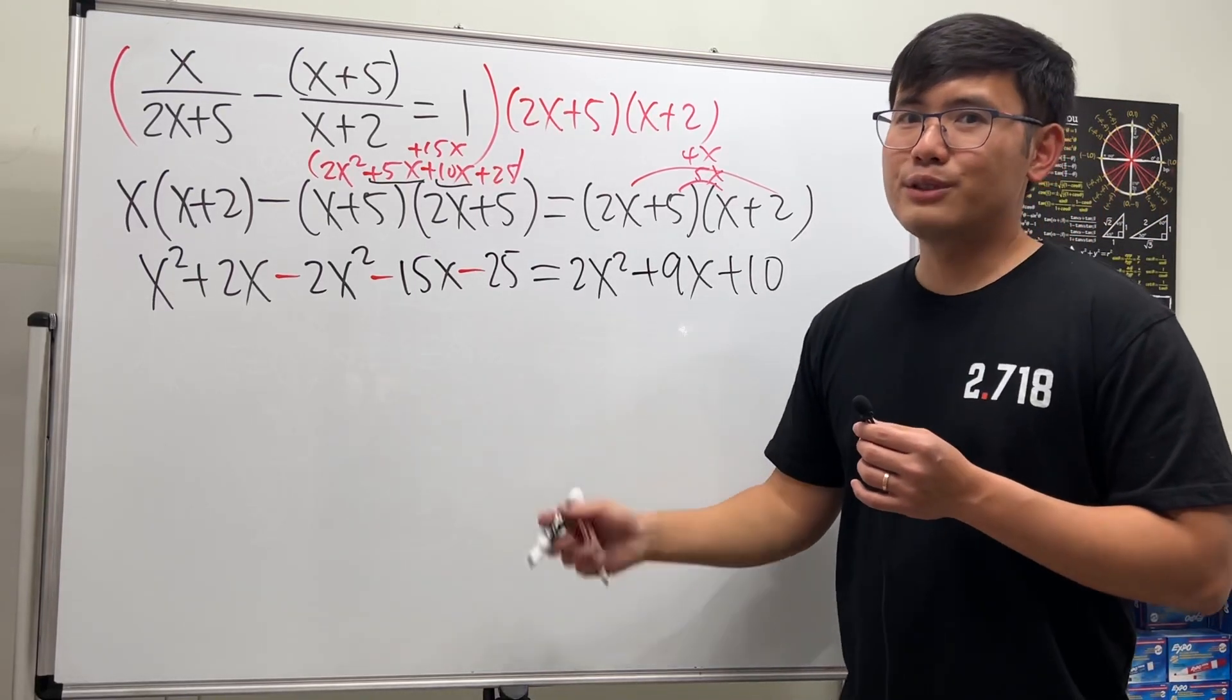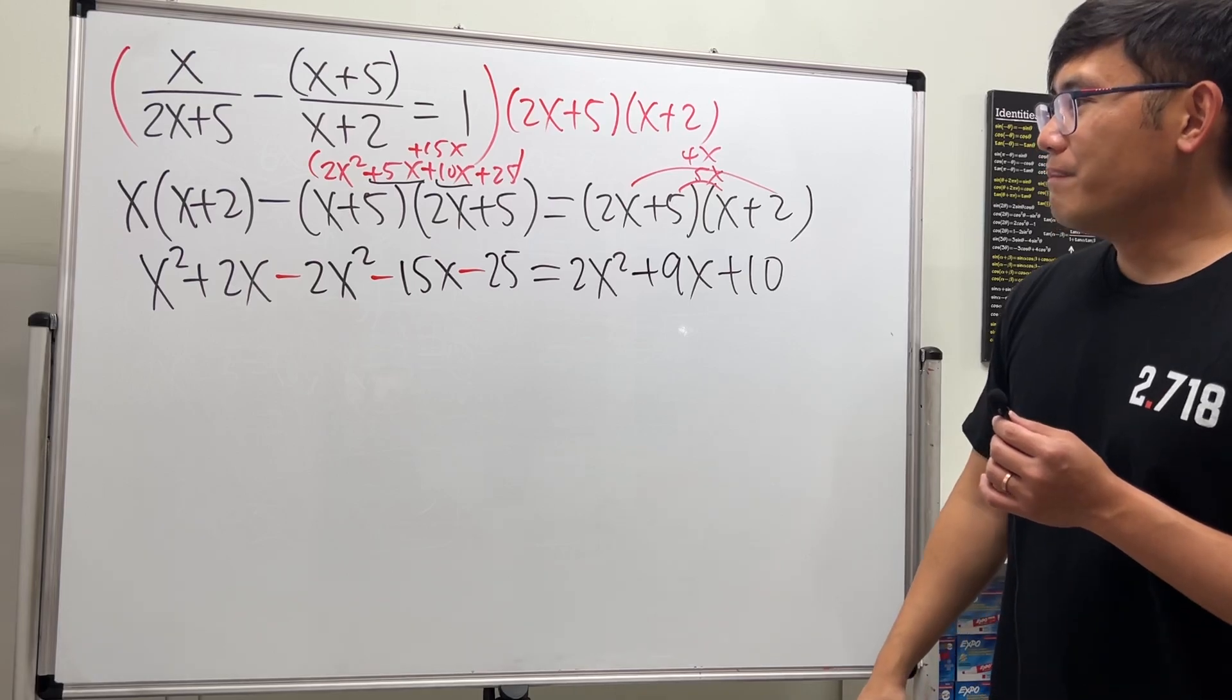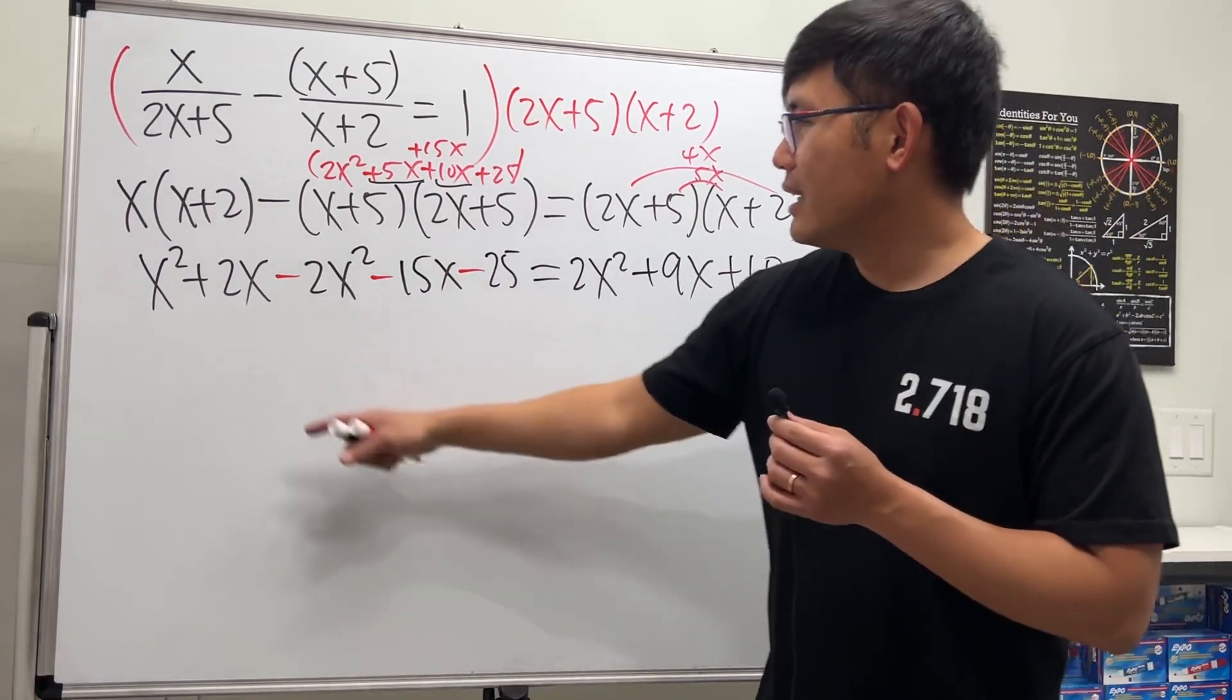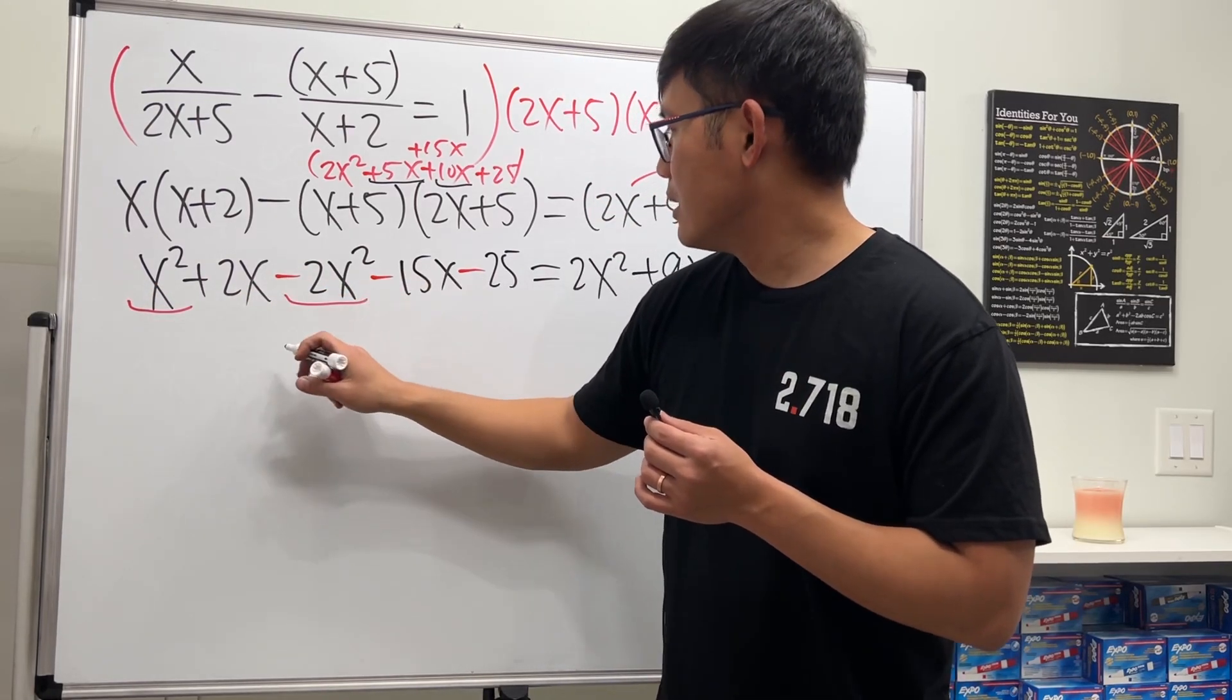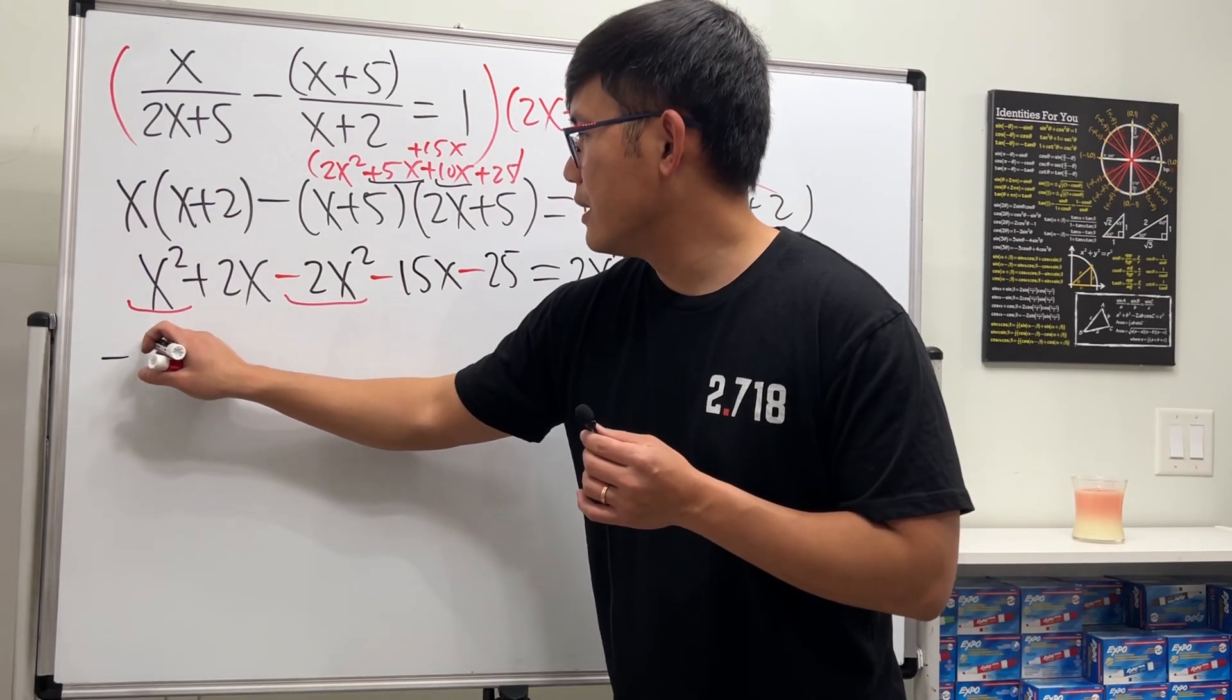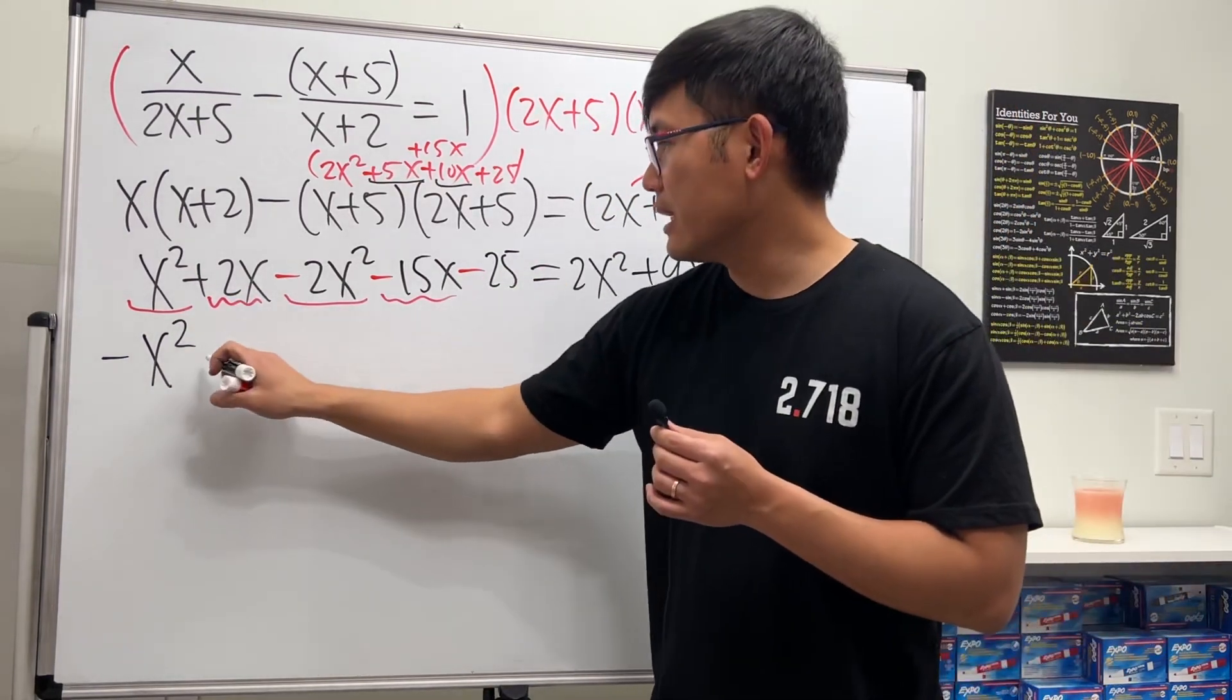Okay, this is actually a quadratic equation, so let's just move things around. Let's actually combine like terms on the same side first. So here we see this and that can be combined as negative x squared, and then this and that is minus 13x.